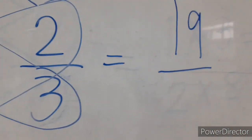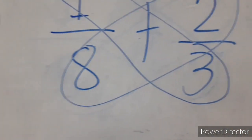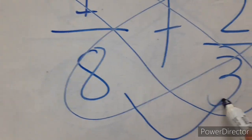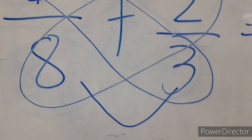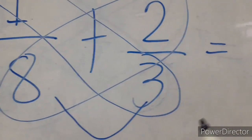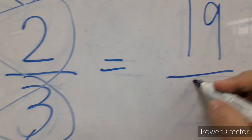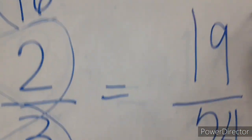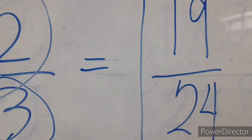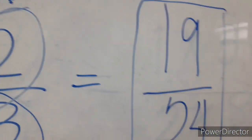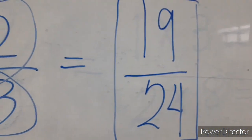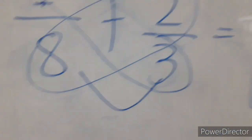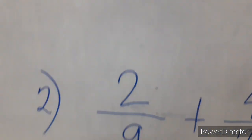What is our denominator? Multiply 8 times 3. 8 times 3 is 24. So the answer is 19 over 24.